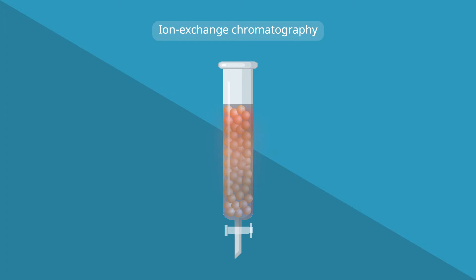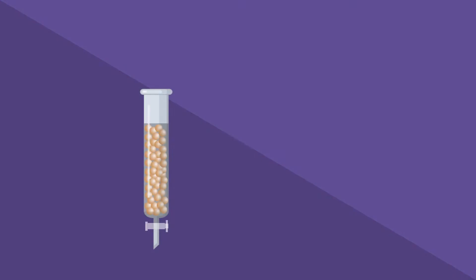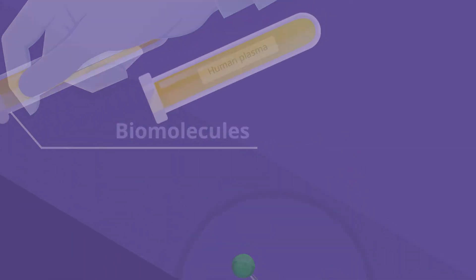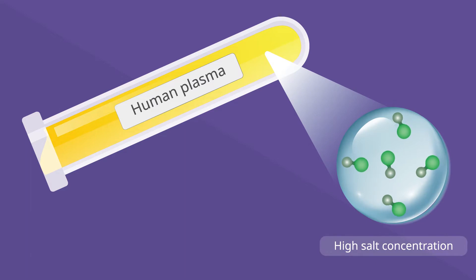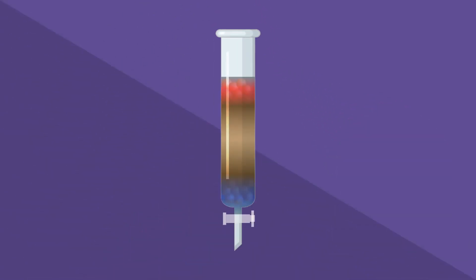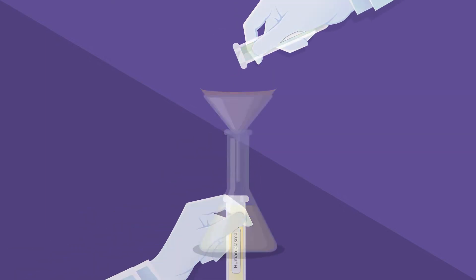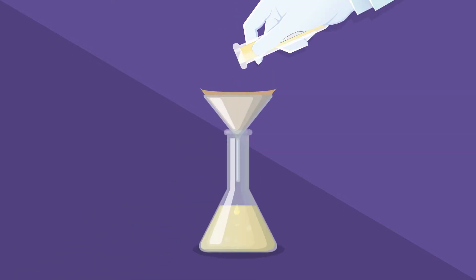However, these resins often suffer from low salt tolerance. This makes the separation of proteins from biological samples, such as human plasma, which tend to have high salt concentrations, quite challenging, expensive, and resource intensive, where the samples first need to be made suitable via dilution or filtration processes.